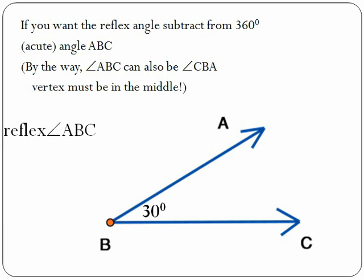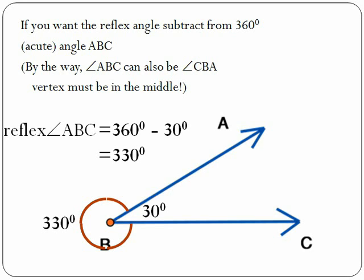If you want the reflex angle, subtract from 360 degrees. Angle ABC, by the way, angle ABC can also be angle CBA. The vertex must be in the middle.